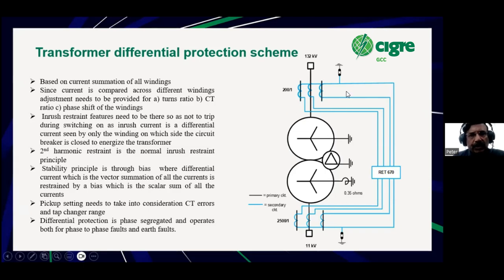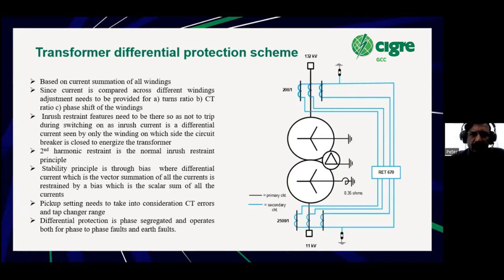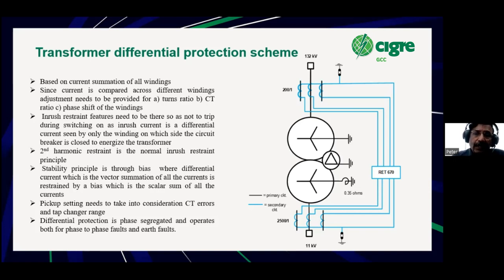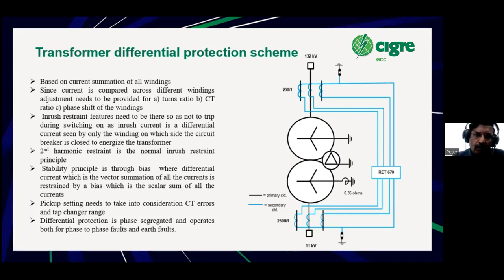One of the challenges of differential protection is when you switch on from the HV side, there will be a huge inrush which will be seen by the relay as a differential current. The modern method is to use a second harmonic restraint feature. Since the transformer inrush has got a significant second harmonic component, that is filtered and compared with the fundamental. A setting of 10% or 15% is used to block the relay. We also want the relay to operate if we switch on to a fault, and there are other algorithms for that.